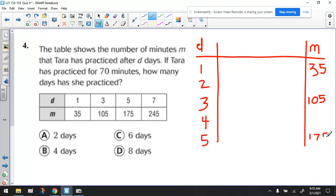If we look at the pattern here, let's try to figure out what's going on. Is there something that we can do to the one to get 35? At first you might think, maybe it's add 34. But if we look at this one right here, if we add 34 to three, we're not going to get 105. And likewise, if we add that same number to five, we're not going to get 175.